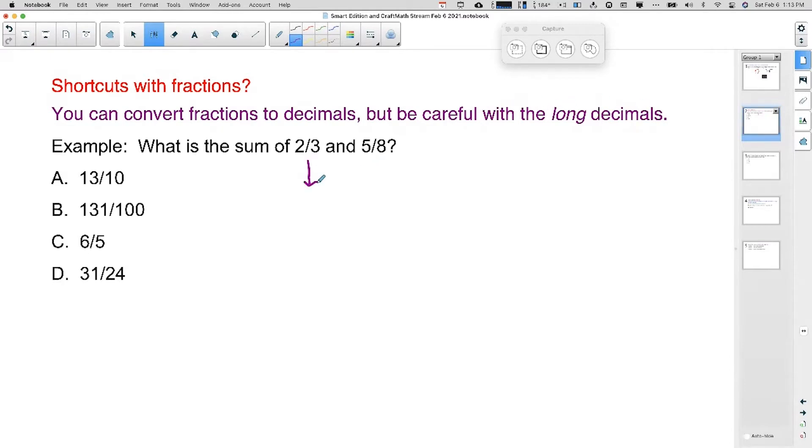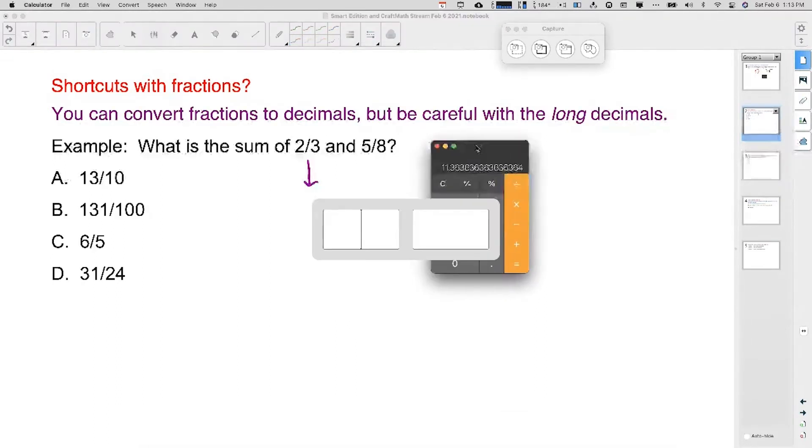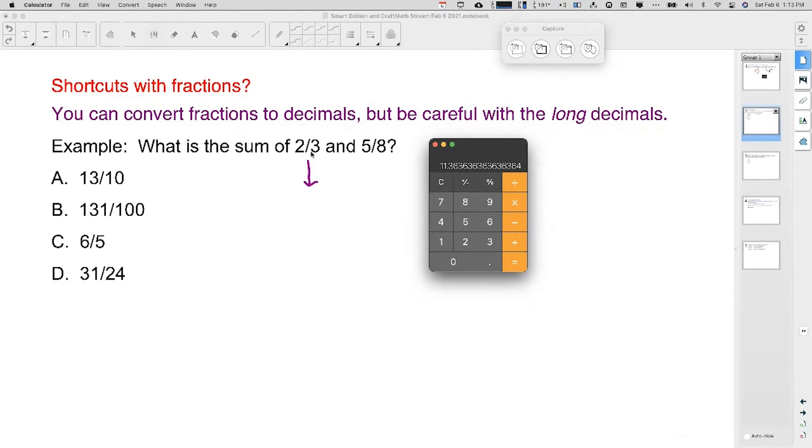So two-thirds, and something you want to tell yourself right now if you didn't know this: to convert a fraction to a decimal, we just take the top number divided by the bottom number. So two divided by three, we get 0.6 repeated. And don't worry about that seven on the end. The calculator is just rounding.